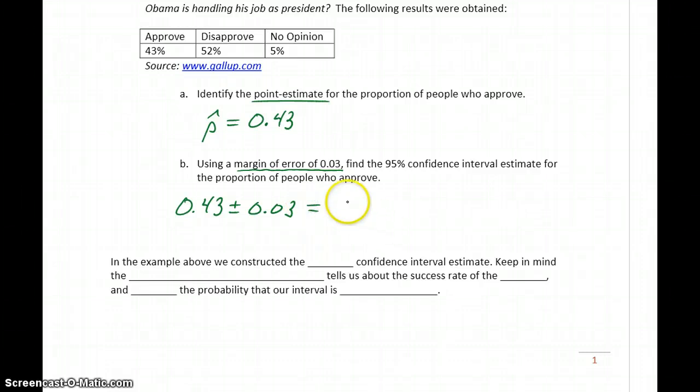We would take 0.43 minus 0.03, so we would get 0.4, and then we would take 0.43 plus 0.03 to get 0.46. That's how we generate that range of values, assuming we know the point estimate and the margin of error.